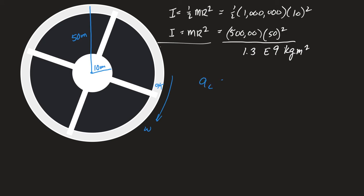Their centripetal acceleration is based on the angular speed of the station times their radius. We need that to be g, so 10 meters per second squared has to equal omega squared times 50 for the radius. This is the angular speed the space station must be spinning at for the people on the outer edge to experience 1g.